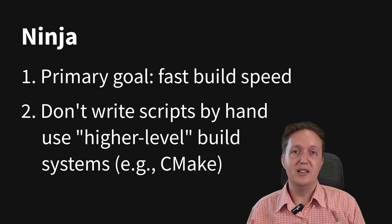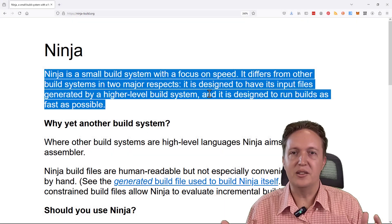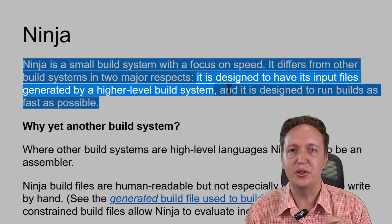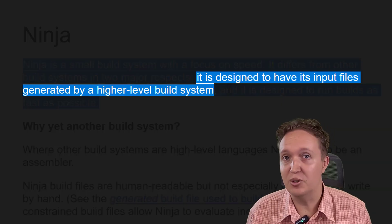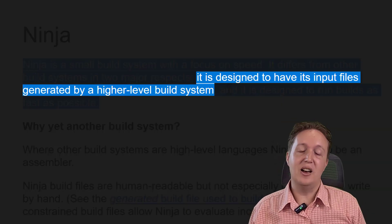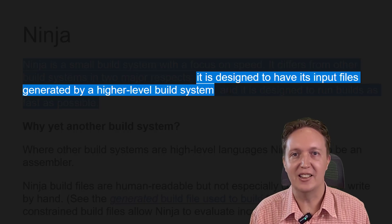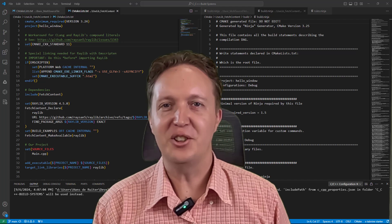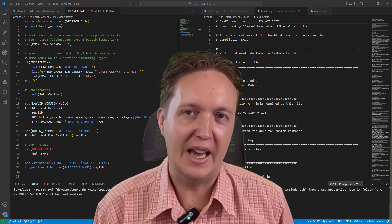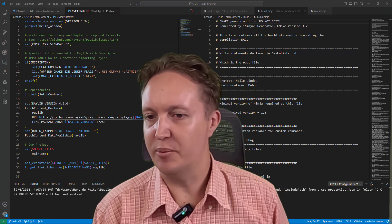And this is why CMake versus Ninja is a weird question — because Ninja's own authors are literally telling you not to write the build scripts by hand, but to use something like CMake instead. The only reason I've written a Ninja build script by hand is to show you what it looks like. And just in case you're thinking you want to try writing Ninja build scripts by hand anyway, let's have a look at a slightly more complicated project.